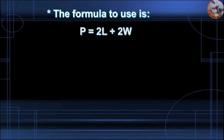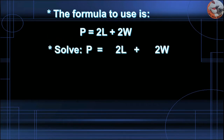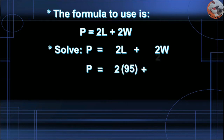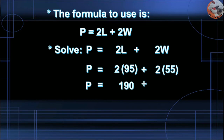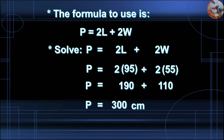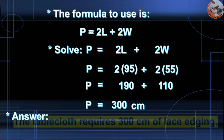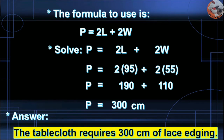The formula to use is P = 2L + 2W. Solving: P = 2 × 95 + 2 × 55. P = 190 + 110. P = 300 centimeters. Answer: The tablecloth requires 300 centimeters of lace edge.